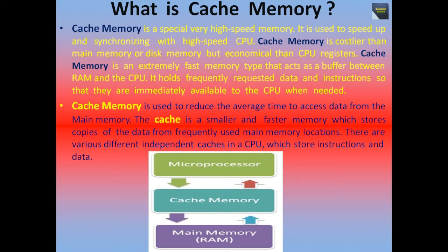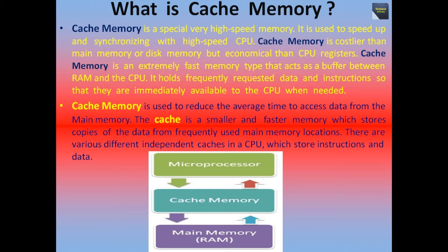Today I will discuss the topic cache memory. So first we should know what is cache memory. Cache memory is a special, very high-speed memory. It is used to speed up and synchronize with the high-speed CPU. Cache memory is costlier than main memory or disk memory but economical than CPU registers. It acts as a buffer between RAM and the CPU.